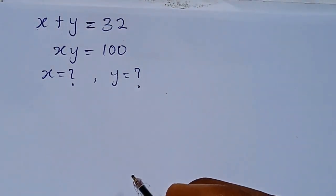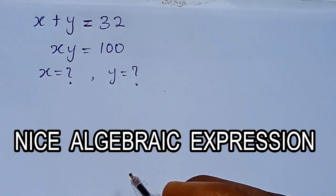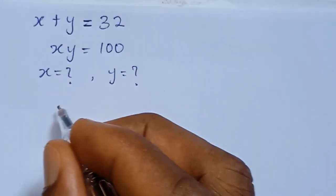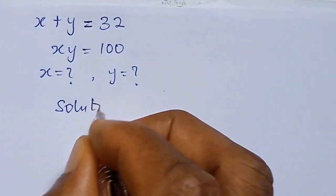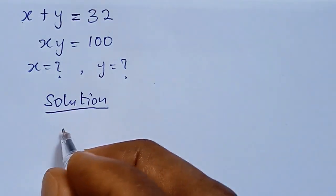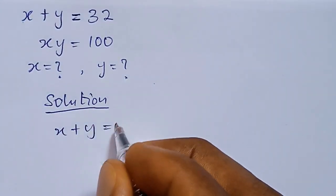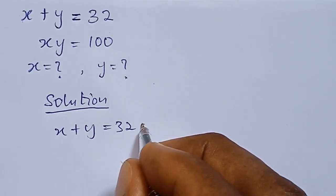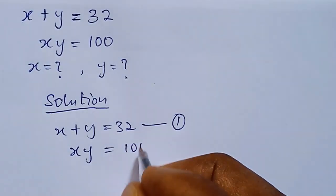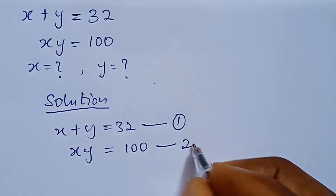Hi everyone, welcome to yet another exciting lesson. As you can see on your view, we are asked to solve for x and y in this expression. From the expression we have x plus y equals 32 — let's take this as equation 1 — then x times y equals 100, as equation 2.